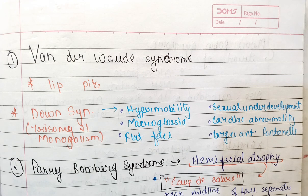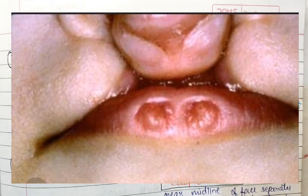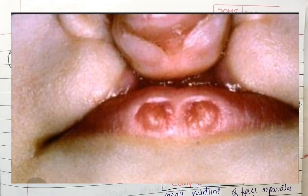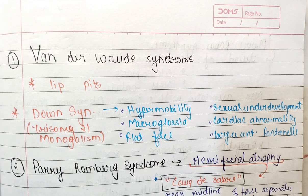We are going to discuss five syndromes. The first syndrome is Van der Woude syndrome. The speciality of Van der Woude syndrome is lip pits. If there is a clinical question where a patient comes with a complaint related to lip pits, you have to remember that it is a sign of Van der Woude syndrome.